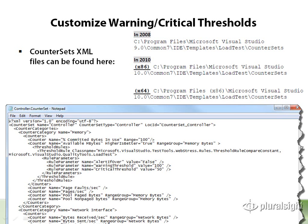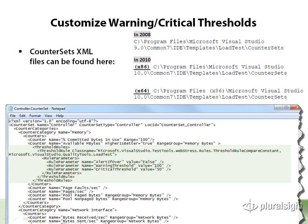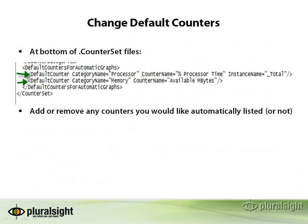It's a pretty straightforward XML file. You can simply go in and change the threshold rule for an individual counter and specify whether or not it has a threshold and what that threshold should be. You can also change which counters show up by default — so if you always need that SQL Server counter and you'd like it to be there the first time without having to add it yourself, you can do that by adding a default counter element to that same counter XML file.